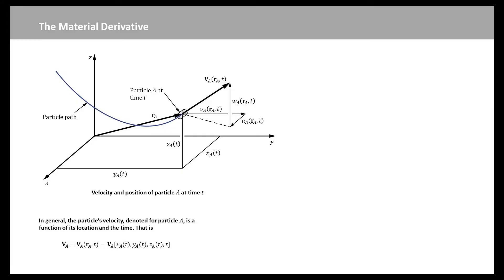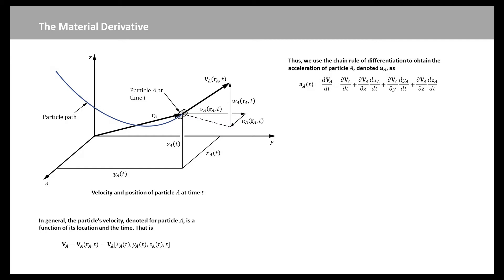Consider a fluid particle moving along its path line as shown in this figure. In general, the particle's velocity, denoted Va for particle A, is a function of its location and time. That is this equation, where xA, yA, and zA define the location of the moving particle. By definition, the acceleration of a particle is the time rate of change of its velocity. Since the velocity may be a function of both position and time, its value may change because of the change in time as well as the change in the particle's position. Thus, we use the chain rule of differentiation to obtain the acceleration of particle A, denoted AA.